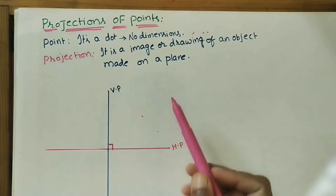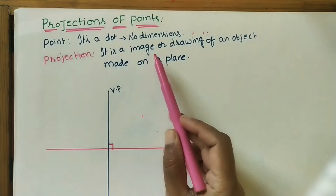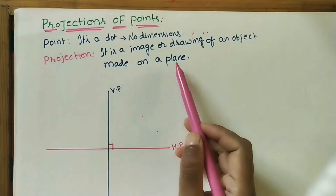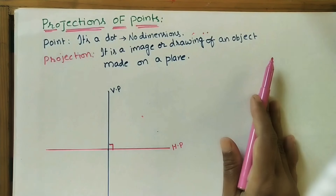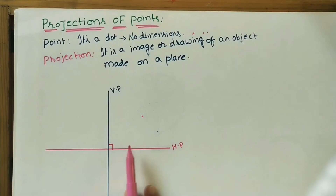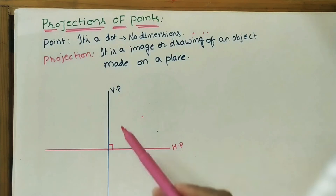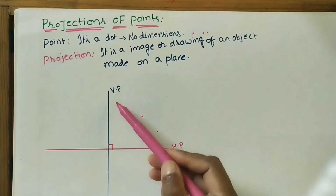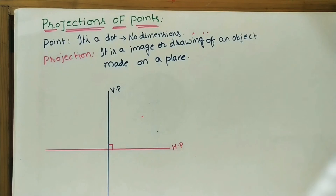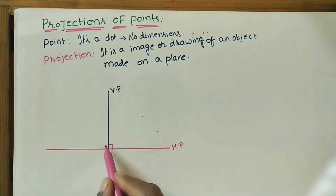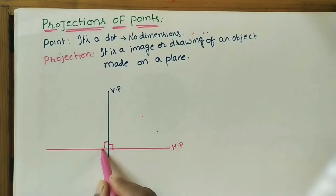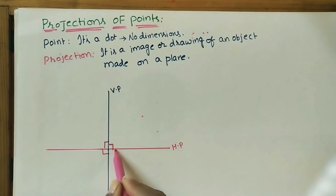Here we are doing the images or drawings on a plane. Which plane are we taking? In engineering drawing we take the horizontal plane (HP) and the vertical plane (VP). The angle between the vertical plane and the horizontal plane is 90 degrees on all sides.